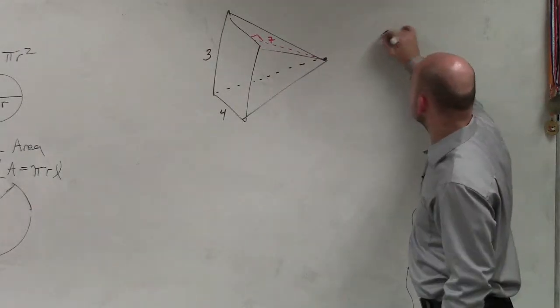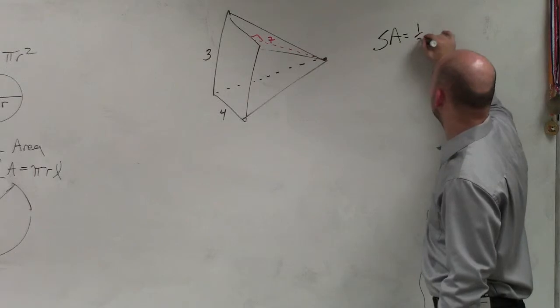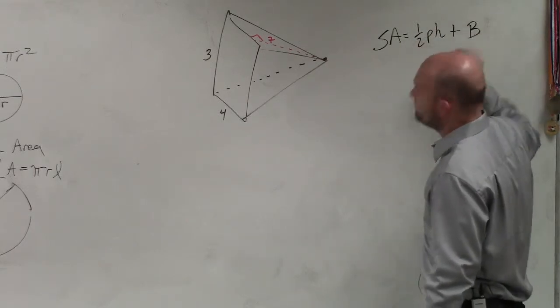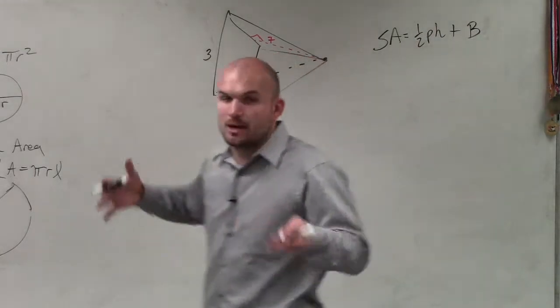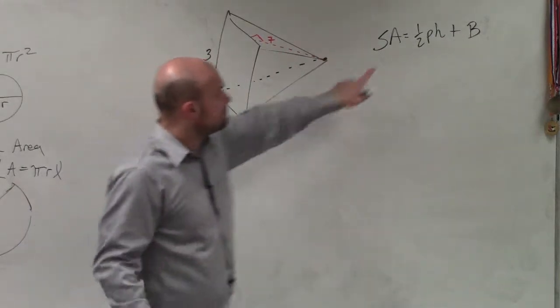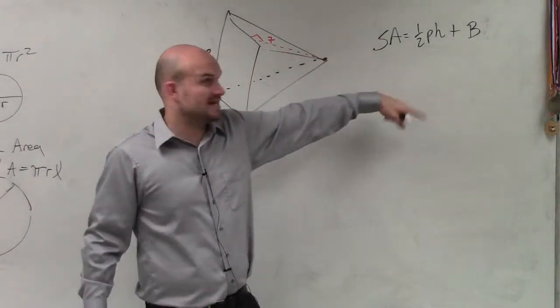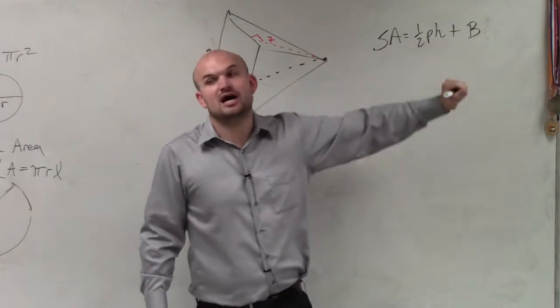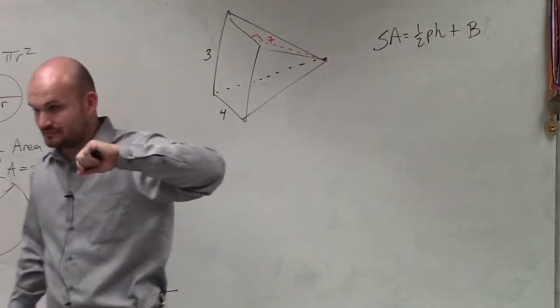So to find the surface area, if you guys remember, equals one-half perimeter times height plus B, where B is our area of our base, and P would be the perimeter of our base, and h is the height of our slant.